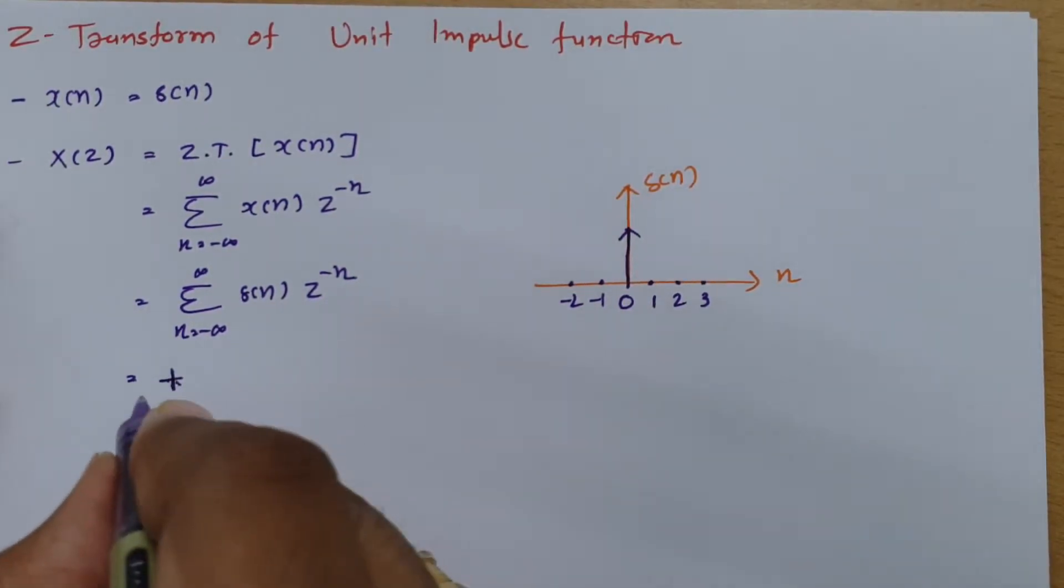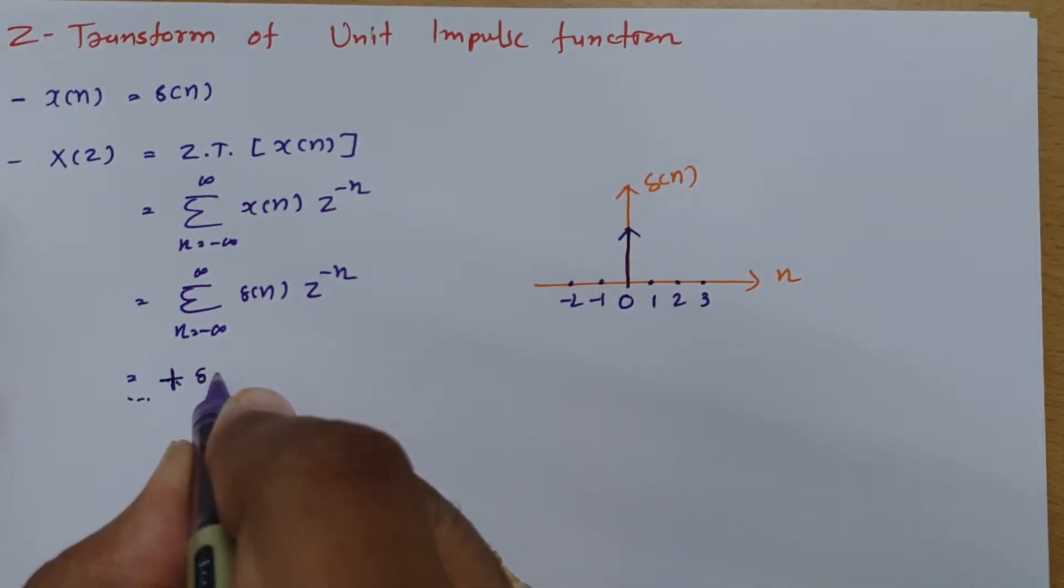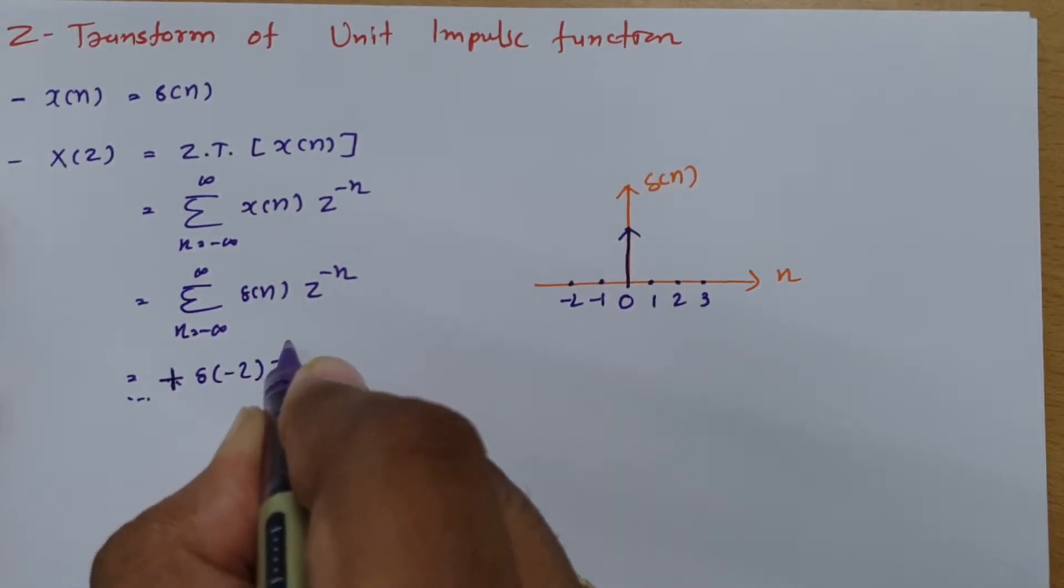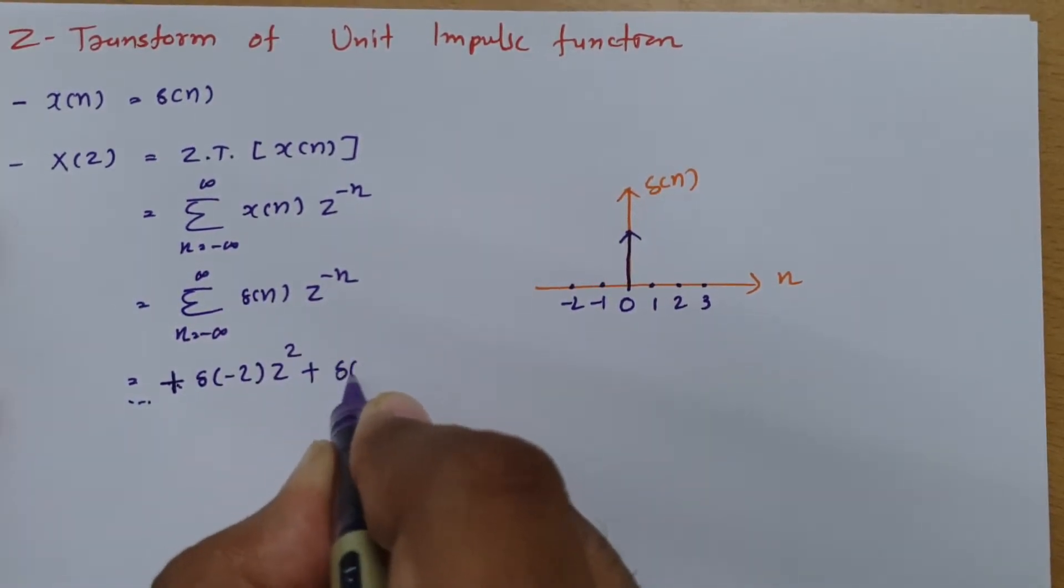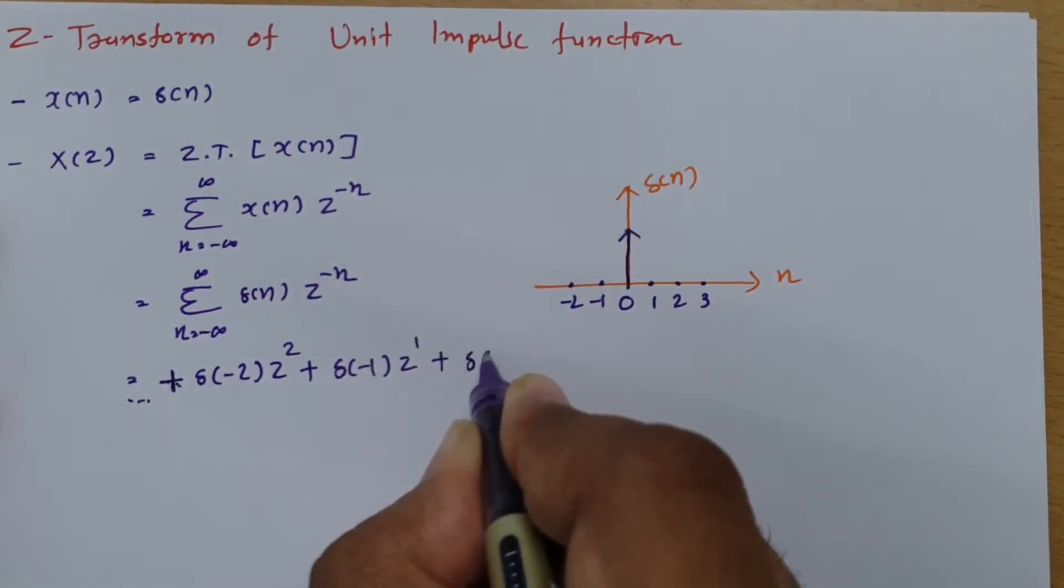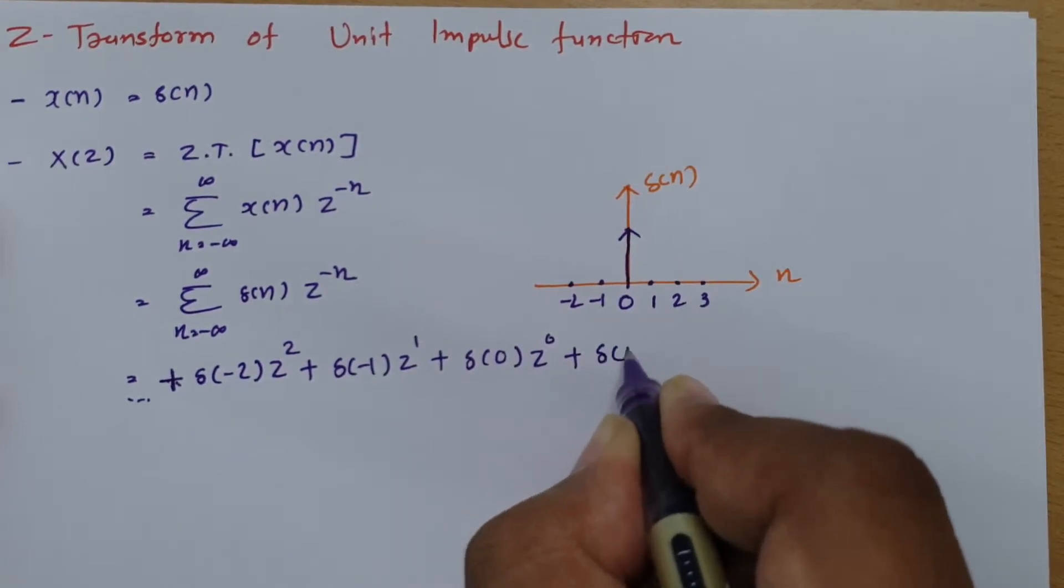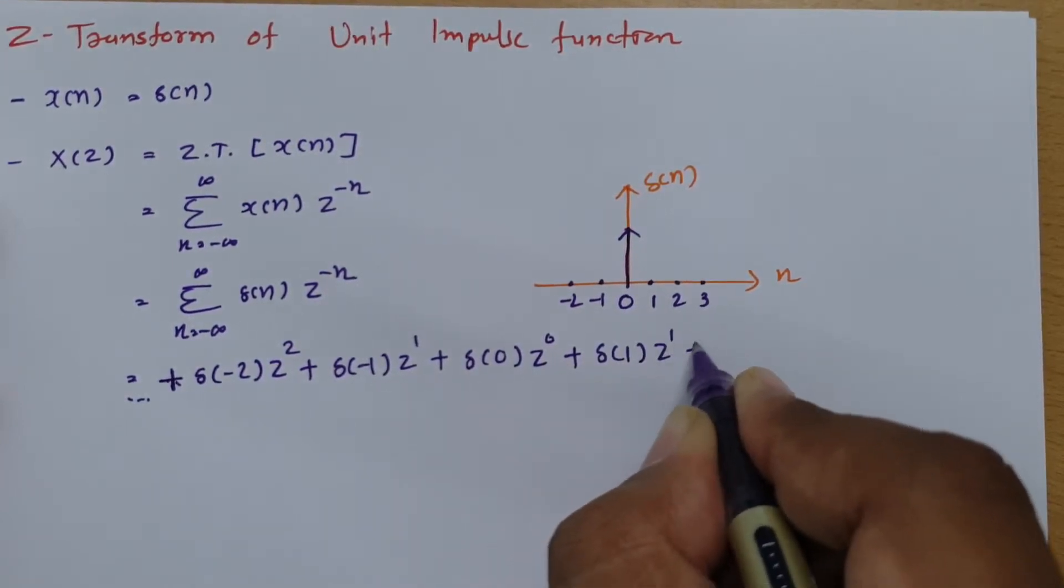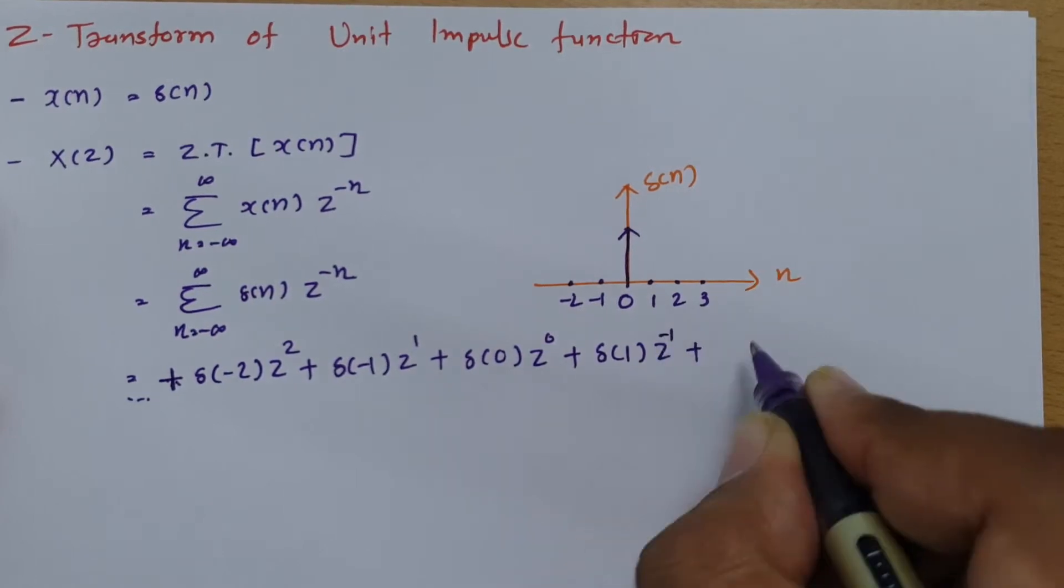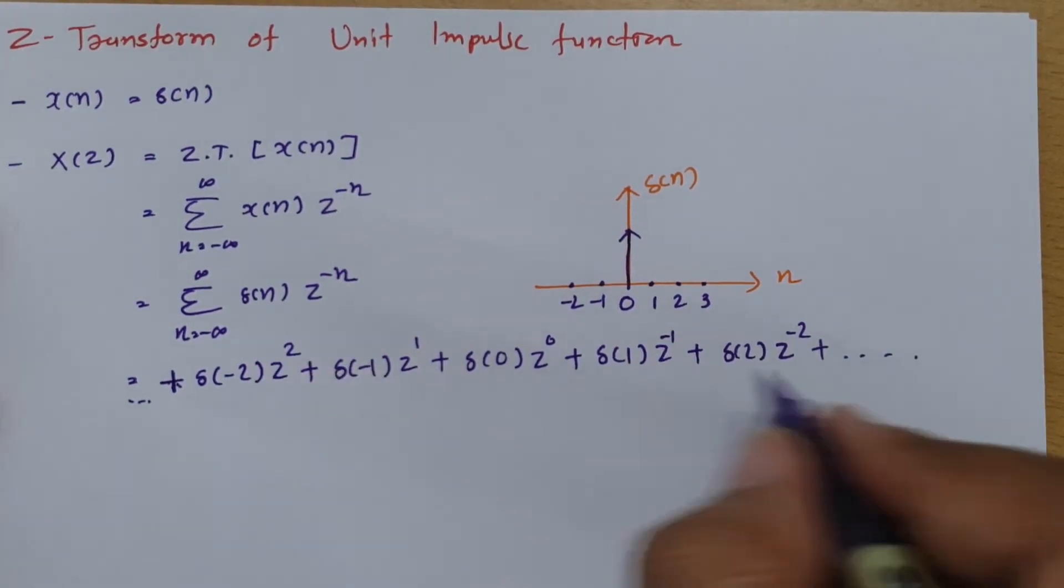From negative infinity: δ(-2) times Z to the power 2, plus δ(-1) times Z to the power 1, plus δ(0) times Z to the power 0, plus δ(1) times Z to the power minus 1, plus δ(2) times Z to the power minus 2, and so on. This is how the summation will happen.